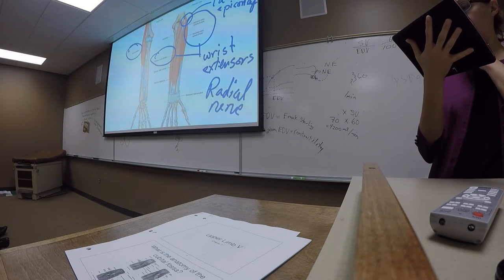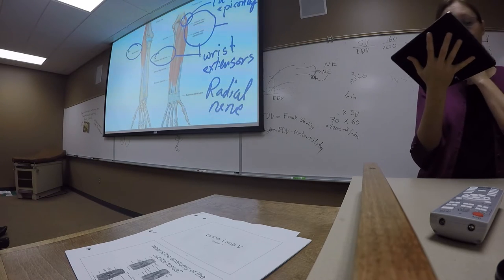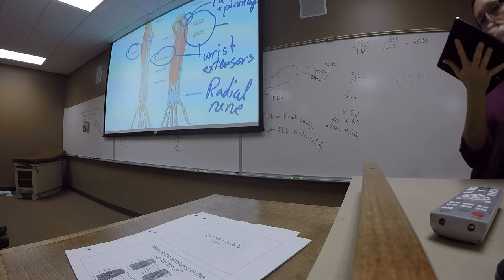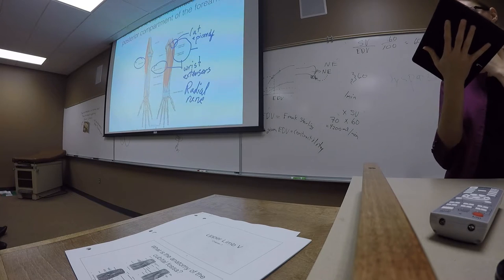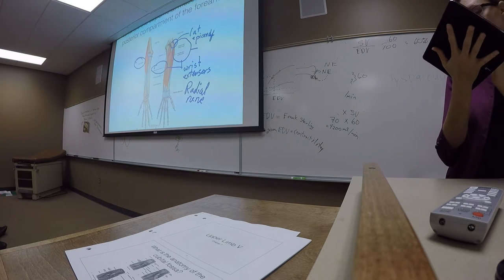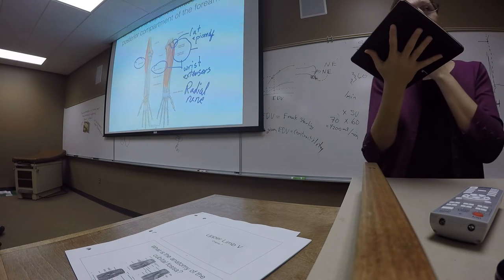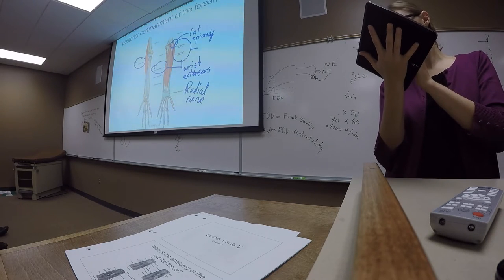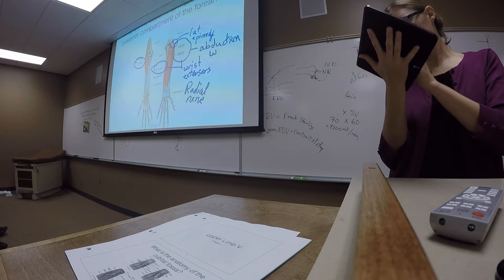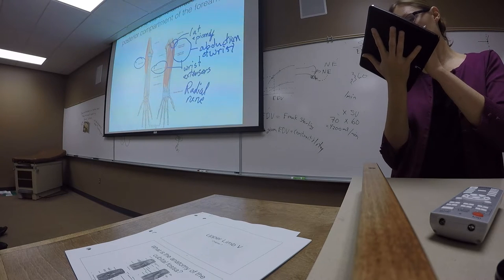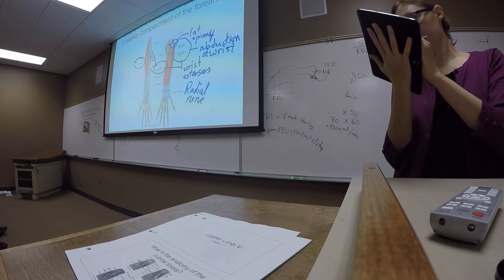The extensor carpi radialis longus and brevis are also involved in moving the wrist joint laterally — this would be abduction. Conversely, the extensor carpi ulnaris would produce adduction.